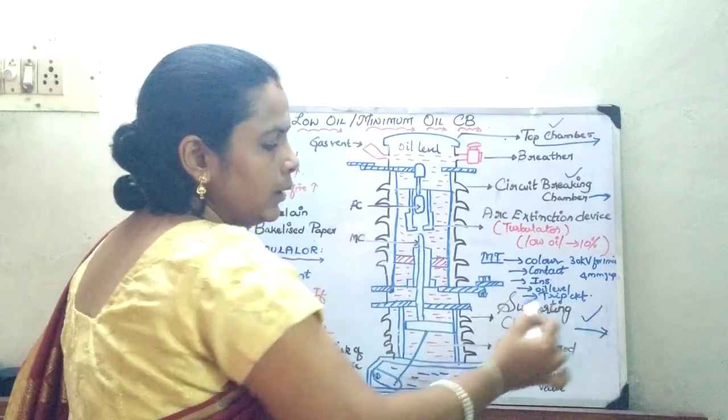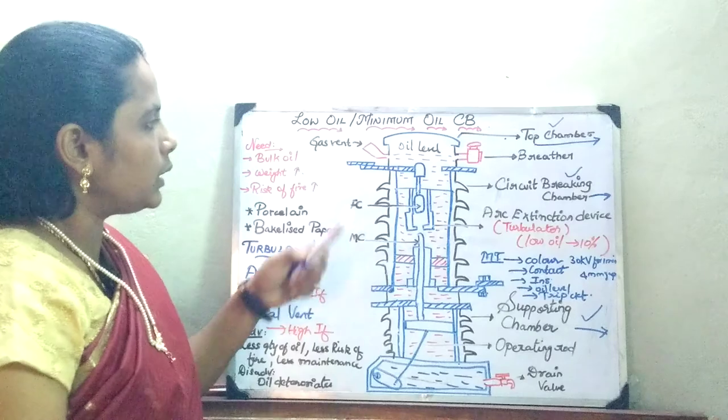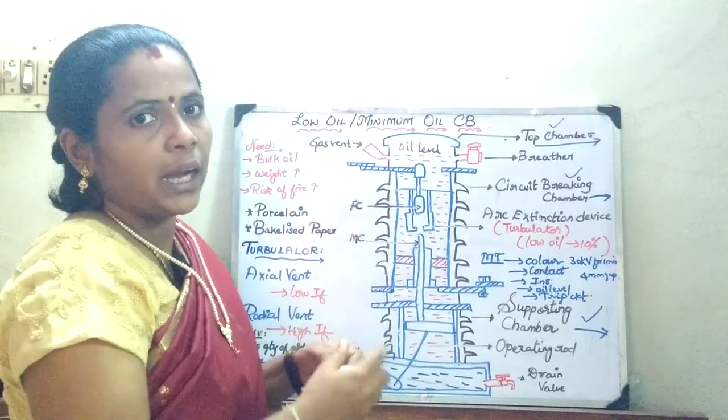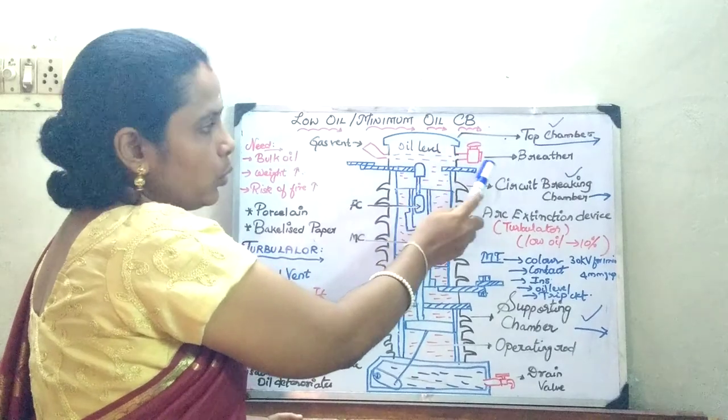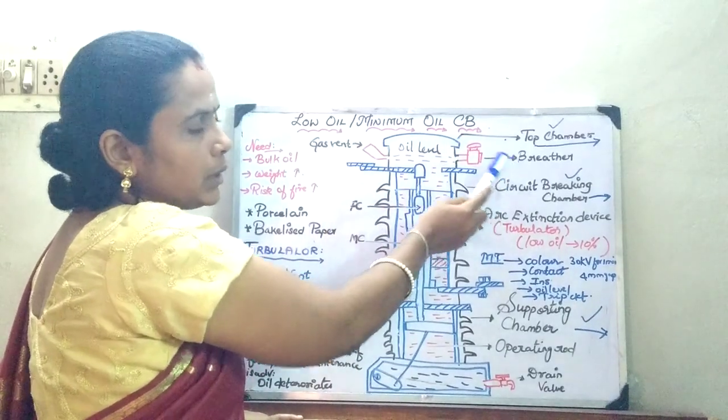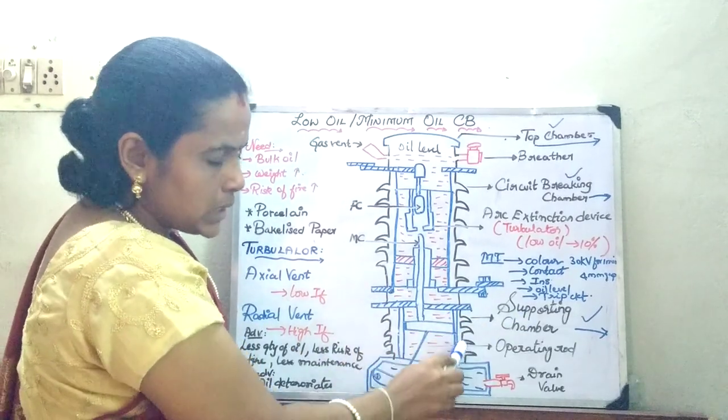The top chamber just provides a vent for the gases. You are going to have a gas vent on one side and the breather on the other side. Now we will move on to the supporting chamber.